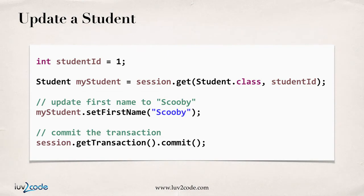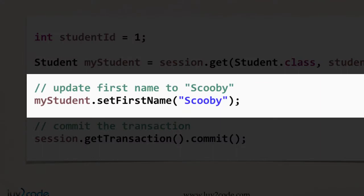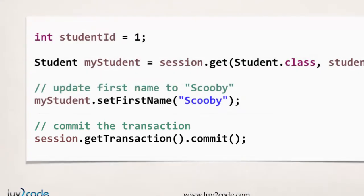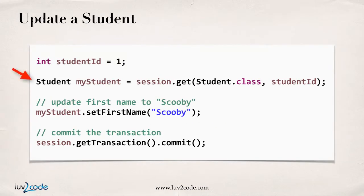Now, what I'd like to do is update this student object that I just retrieved. What I can do is use that student and simply set a property. So here I can say myStudent.setFirstName("Scooby"). By setting first name to Scooby, that updates the student. At this point it's only in memory, but once we commit the transaction, that'll actually update the database. One thing that's important to notice is that we simply retrieve the object, we set a value, and then we commit the transaction. There's no hard requirement to call session.save or session.update.